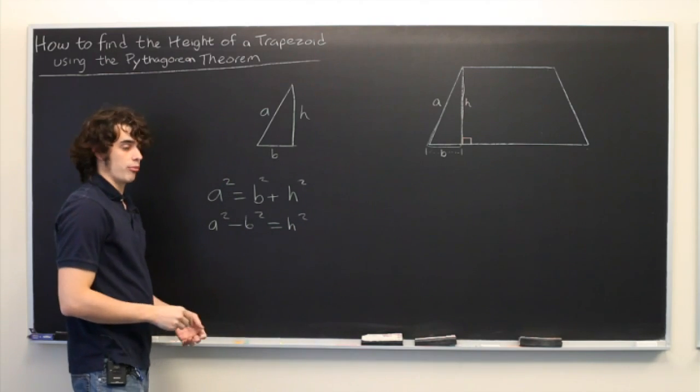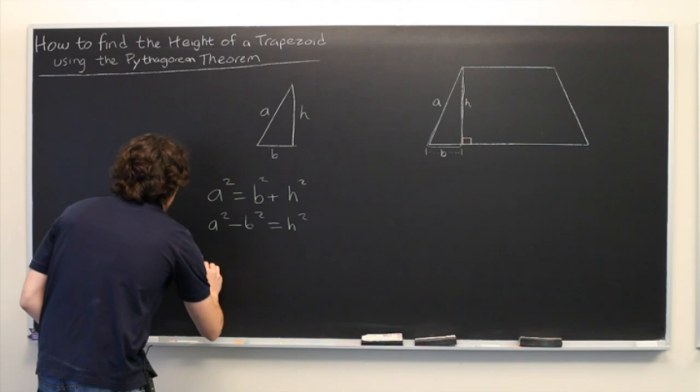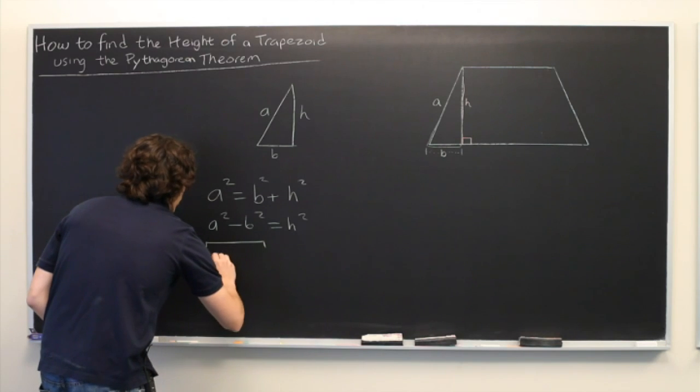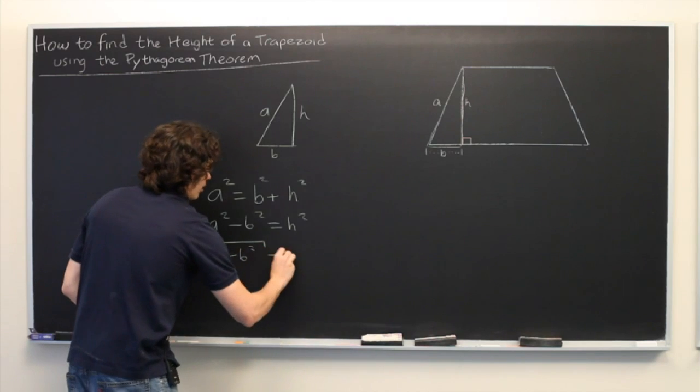From here, we can just take the square root of both sides. Square root of A squared minus B squared equals H.